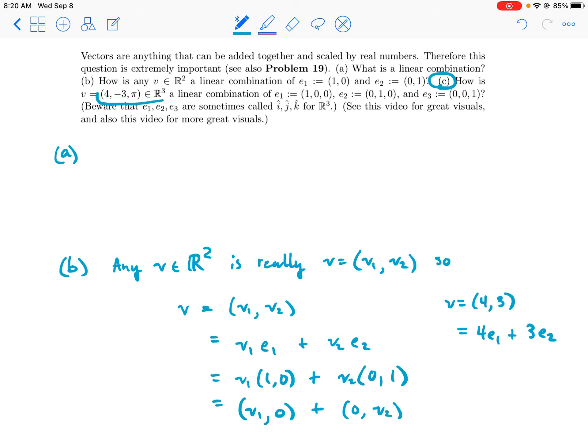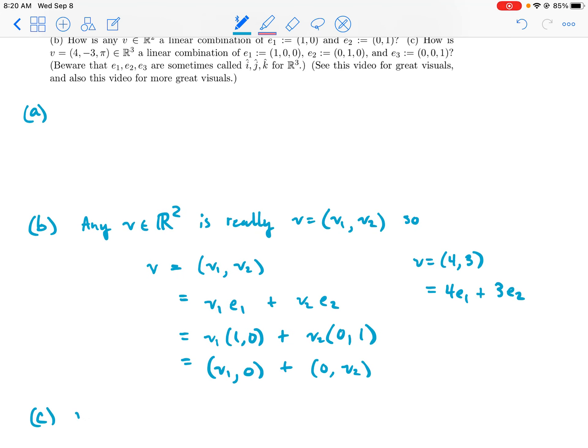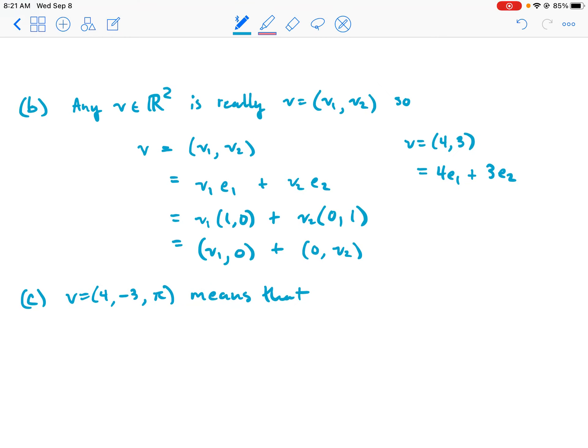Okay, and let's do (c). How is this v a linear combination of e1, e2, e3? So if v equals (4, -3, π)—I'm just copying it from up here—v is (4, -3, π).